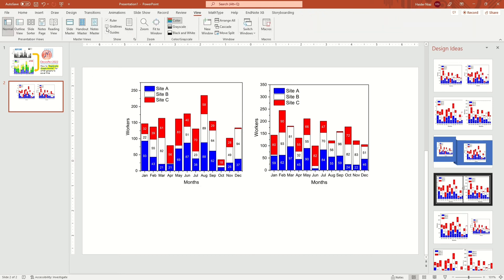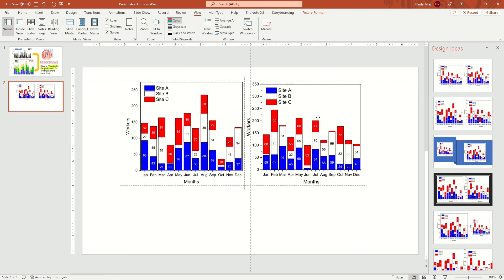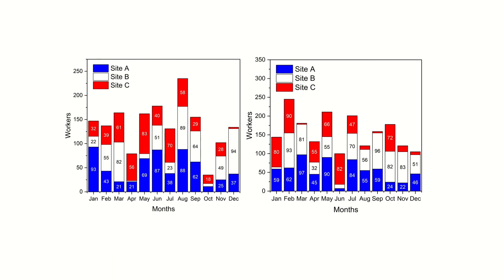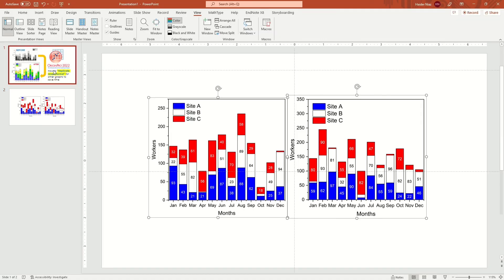Switch on the guides to align the graphs, adjust the height manually until it matches the width of the second graph. Now you can see — when these graphs are of the same dimensions they look much better, and it improves how they appear in your manuscript. The patterns are more easily comparable. For example, in Graph 1 Site A has less workers while Site B has more; in Graph 2 Site B and Site C have more workers while Site C has less. It's easy to make comparisons.